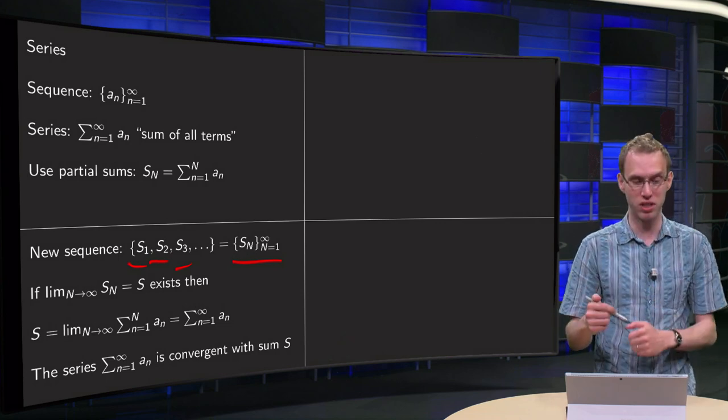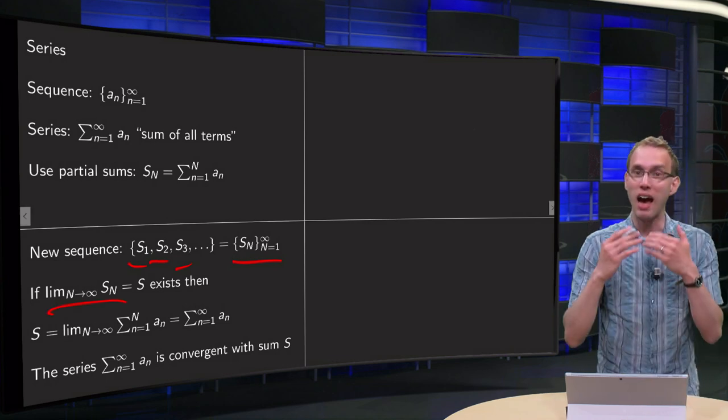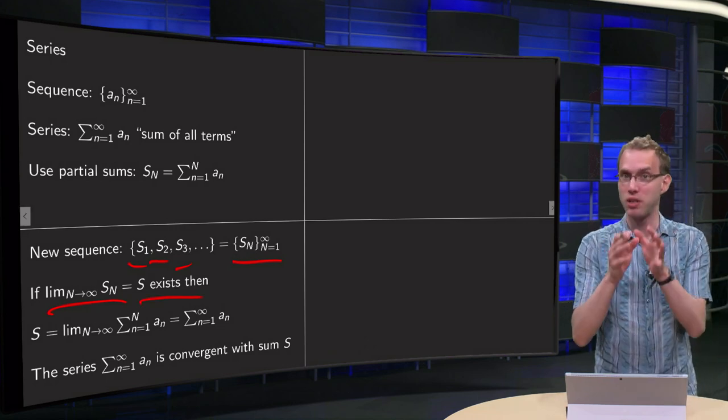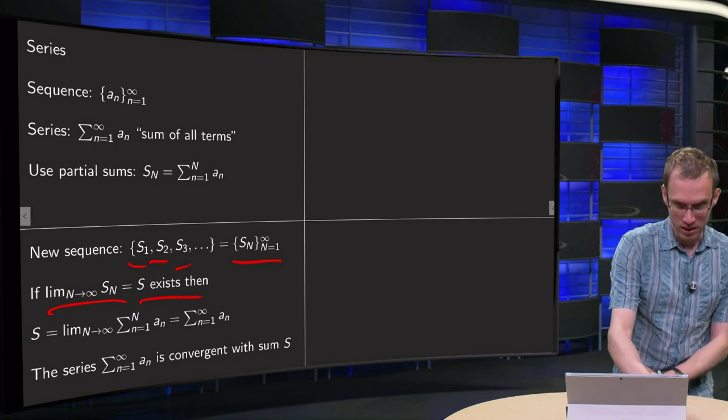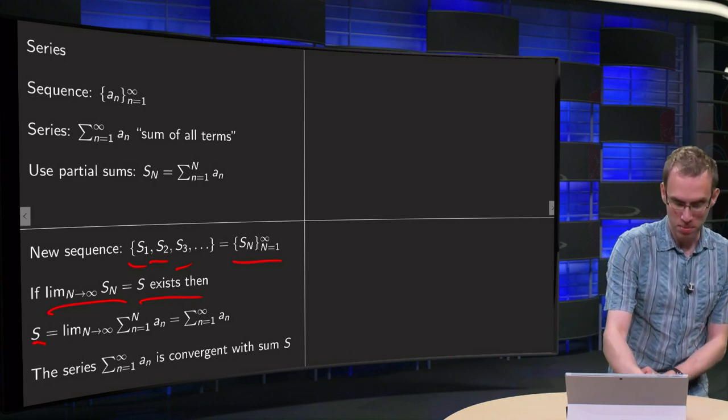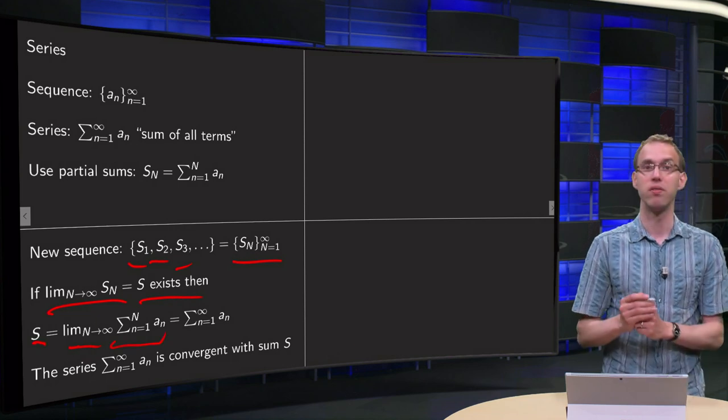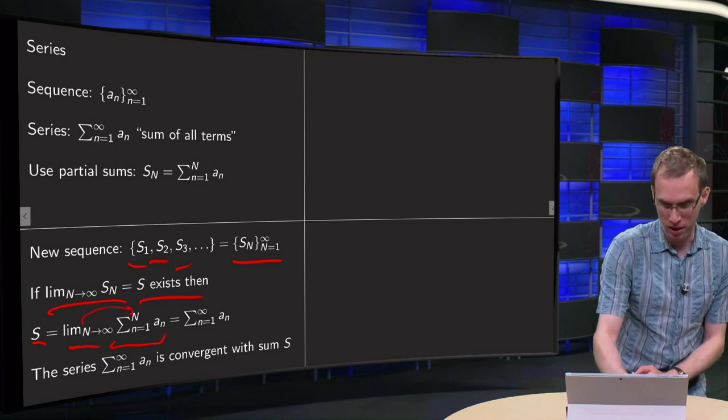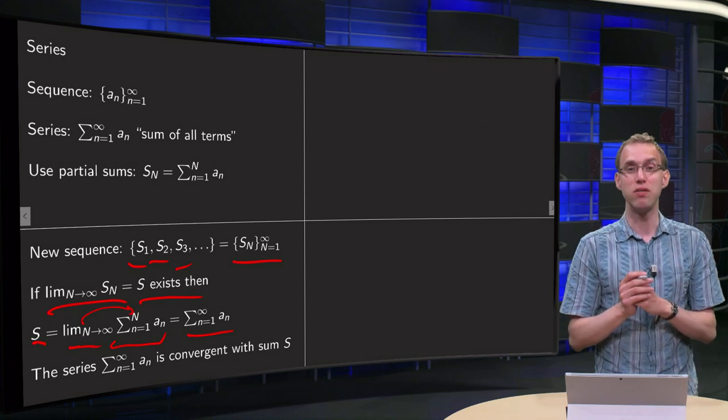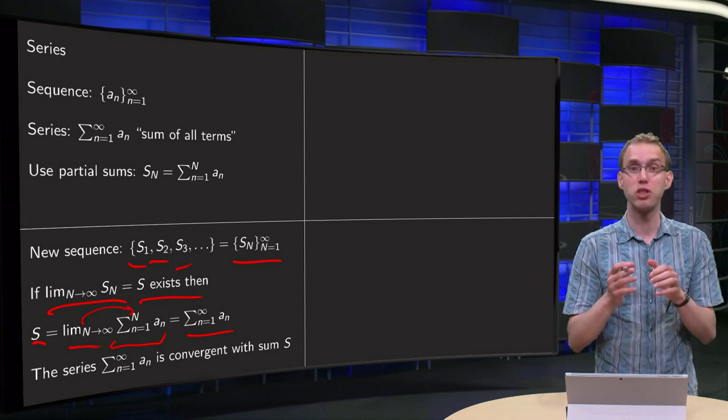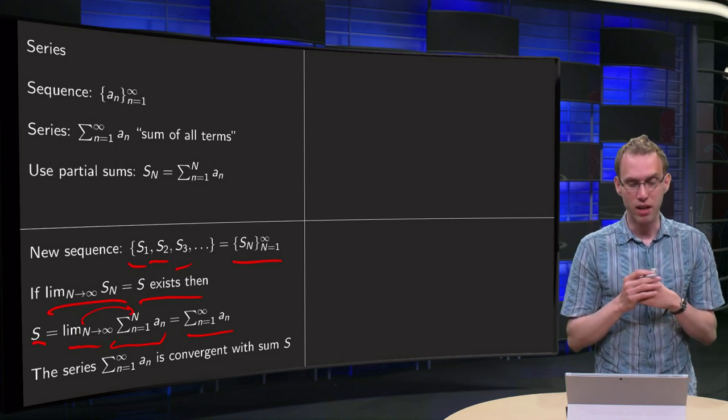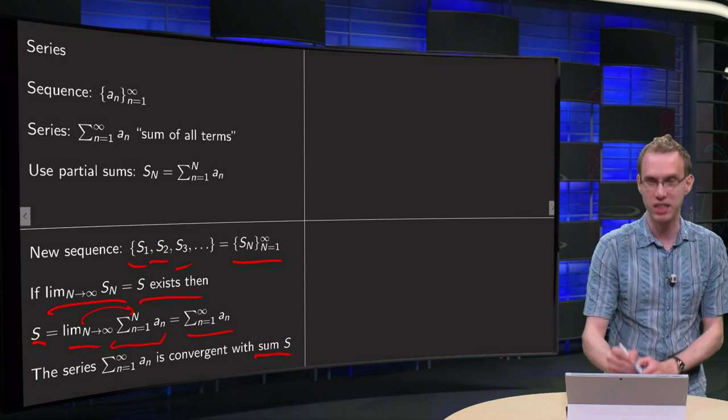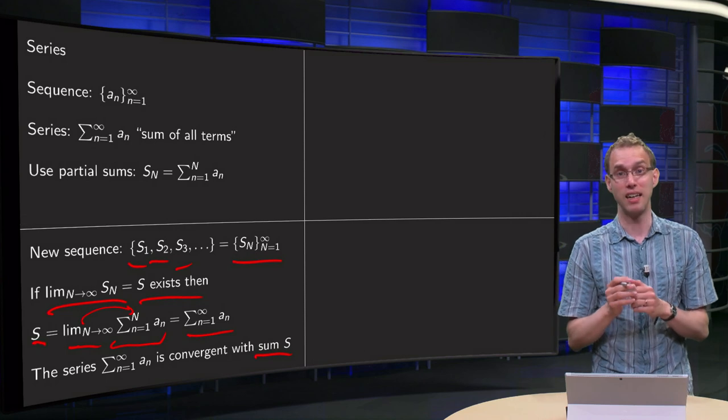So if this limit as N goes to infinity of the partial sums, if this limit exists and it equals S, so it equals some number, what do we know then? Well this capital S is the limit as N goes to infinity of the nth partial sum, which is this expression over here, which is often shortly denoted as follows. So if this sequence of partial sums converges to number S, then the total series is said to be convergent and the sum of the series is called S. So that is how we can add an infinite number of terms.